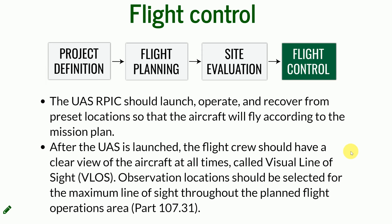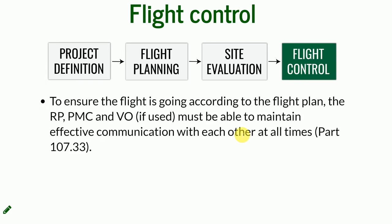We mentioned waivers and how and when you would be able to go beyond visual line of sight, but this is not our case and not the case for the vast majority of UAS users. The flight plan should be designed so that you never lose your UAS from sight, and it should also be adjusted to the visibility conditions at the site. Communication between the visual observer and the pilot must be maintained at all times.